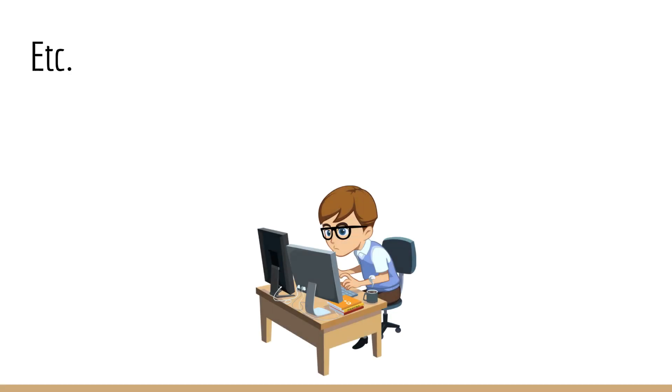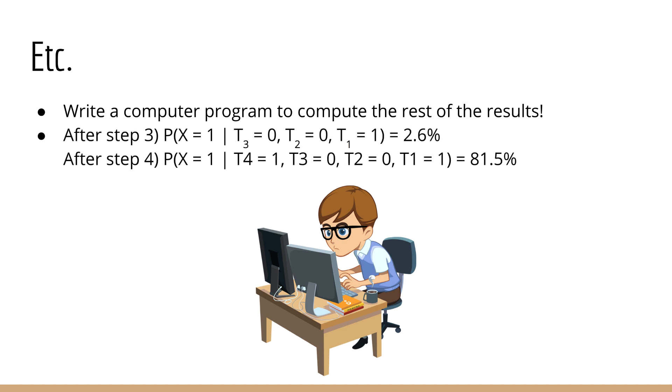Okay, so I'm not going to show you step 3 and step 4, since they are basically the same as steps 1 and 2, using the posterior from the previous step as the prior in the next step. You're encouraged to write a computer program to calculate these values in order to verify that you arrive at the same answer. After the third test, your posterior should be 2.6%, and after the fourth test, your posterior should be 81.5%.